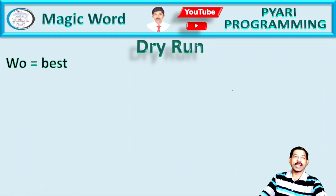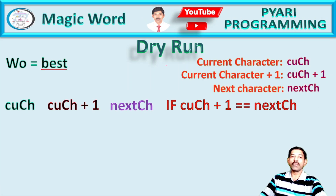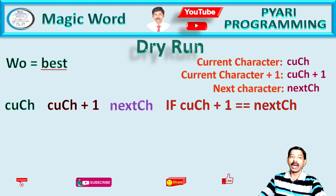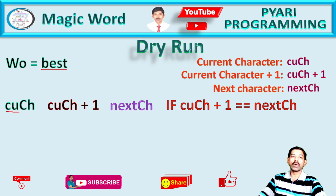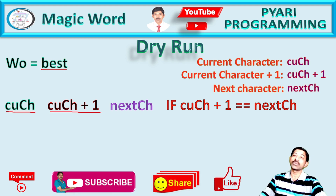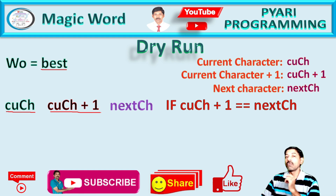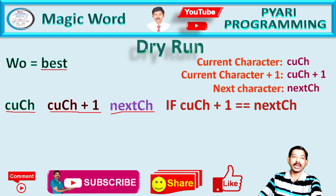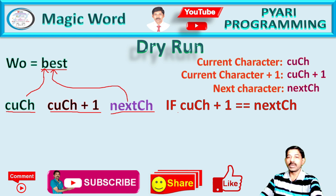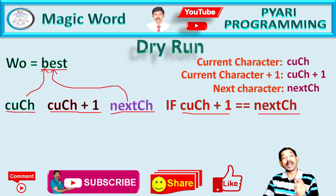Now let's see the dry run. If the user has entered the word 'best', we have to find out the characters and check whether two characters are consecutive or not. For that, I need to take these variables: one for your current character, and one called current character plus one. I will extract the next character — if my current character is 'b', then my next character will be 'e'. After that, I will check if current character plus one equals the next character. If the value of the current character added by one equals the next character, then it is called a consecutive character.